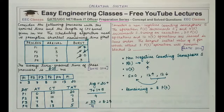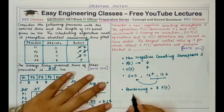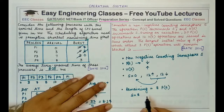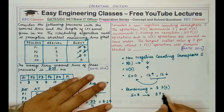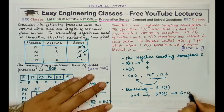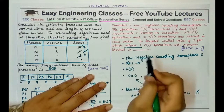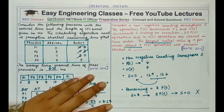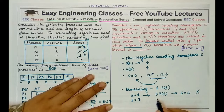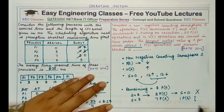If S is initialized to eight, we can perform all eight remaining P(S) operations bringing S to zero — no operation would be blocked. Since we want at least one operation to remain blocked, we assign S equal to seven. With S=7, only seven P(S) operations can execute and one P(S) operation will remain blocked, satisfying the condition.